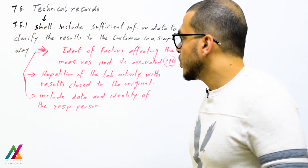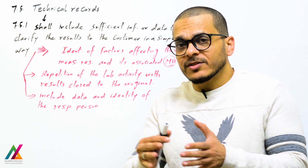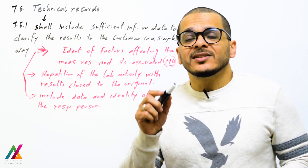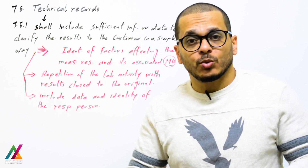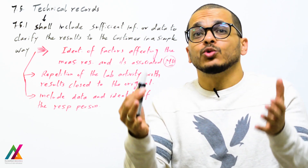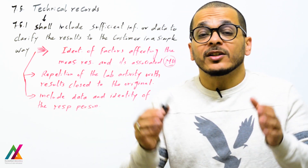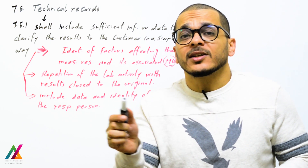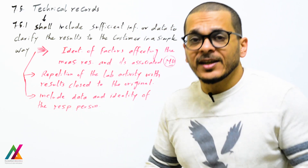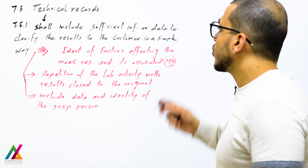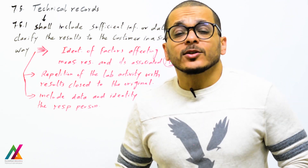Technical records shall include sufficient information to clarify the results, including identification of factors affecting the measurement results. When you quantify measurement uncertainty, you identify all factors affecting the measurement results. You add this to the final results, so in the final report you will have final results plus or minus measurement uncertainty, which accounts for all factors affecting the measurement results.